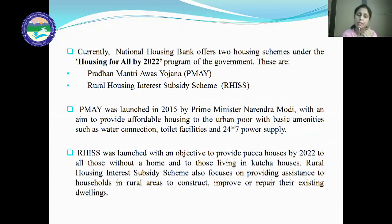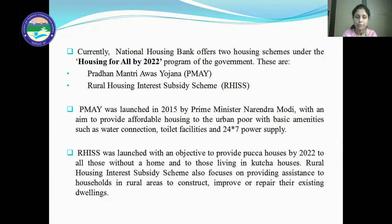Pradhan Mantri Avas Yojana was launched in 2015 by Prime Minister Narendra Modi with the aim to provide affordable housing to urban poor with basic amenities such as water connection, toilet facilities, and 24x7 power supply. The Rural Housing Interest Subsidy Scheme was launched with the objective to provide pucca houses by 2022 to all those without a home and those living in kaccha houses, and also focused on providing assistance to rural households to construct, improve, or repair their existing dwellings.